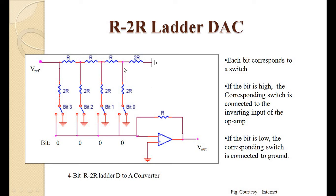An important point: at every node, the resistance available between that node and ground is always 2R. For example, at the rightmost node, the 2R to ground is directly there. For the next node, the two 2R resistors are in parallel — their equivalent is R — and that R in series with the next R gives 2R again. This repeats at every node, so between every node and ground the resistance is always 2R.